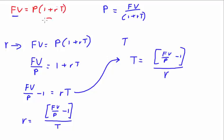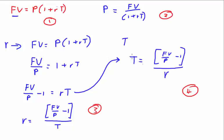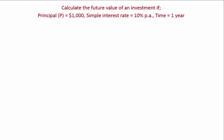So essentially you have four formulas: one — find your future value; two — find your principal; three — find your simple interest rate; and four — find your time. All four have come from one formula: the future value formula.